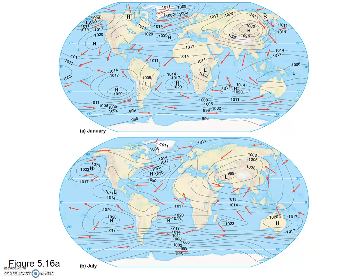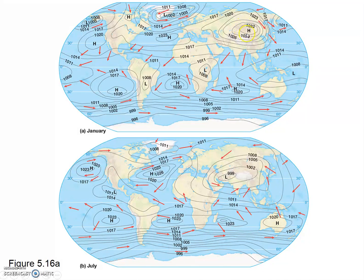Study the two maps from figure 5.16 in your textbook and find the subtropical high cells around 30 degrees north and 30 degrees south in January. Notice in particular how intense the subtropical high is in Central Asia — this cell represents the highest pressures on the map. What happens to temperature in the winter in the interior of a continent?